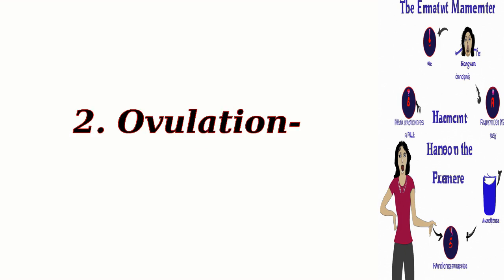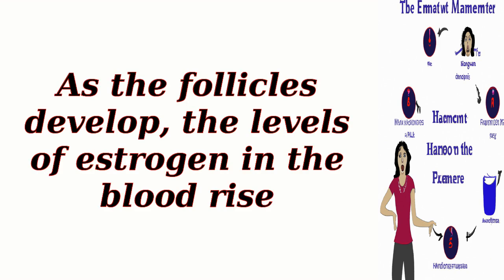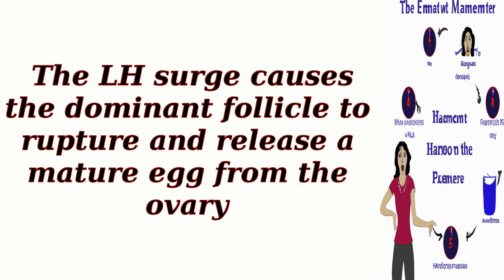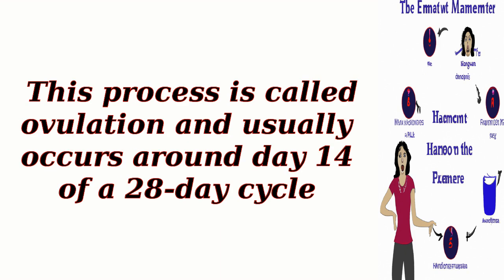2. Ovulation. As the follicles develop, the levels of estrogen in the blood rise. This increase in estrogen triggers a surge in LH secretion from the pituitary gland. The LH surge causes the dominant follicle to rupture and release a mature egg from the ovary. This process is called ovulation and usually occurs around day 14 of a 28-day cycle.